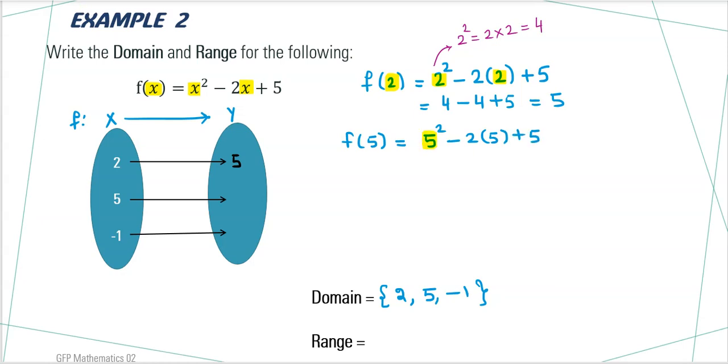You replace this x by 5. On simplification, it gives you 5 times 5 is 25. 5 times 2 is 10 plus 5. When you simplify it, 25 minus 10 gives you 15 plus 5. You get 20. 5 is mapped to 20.